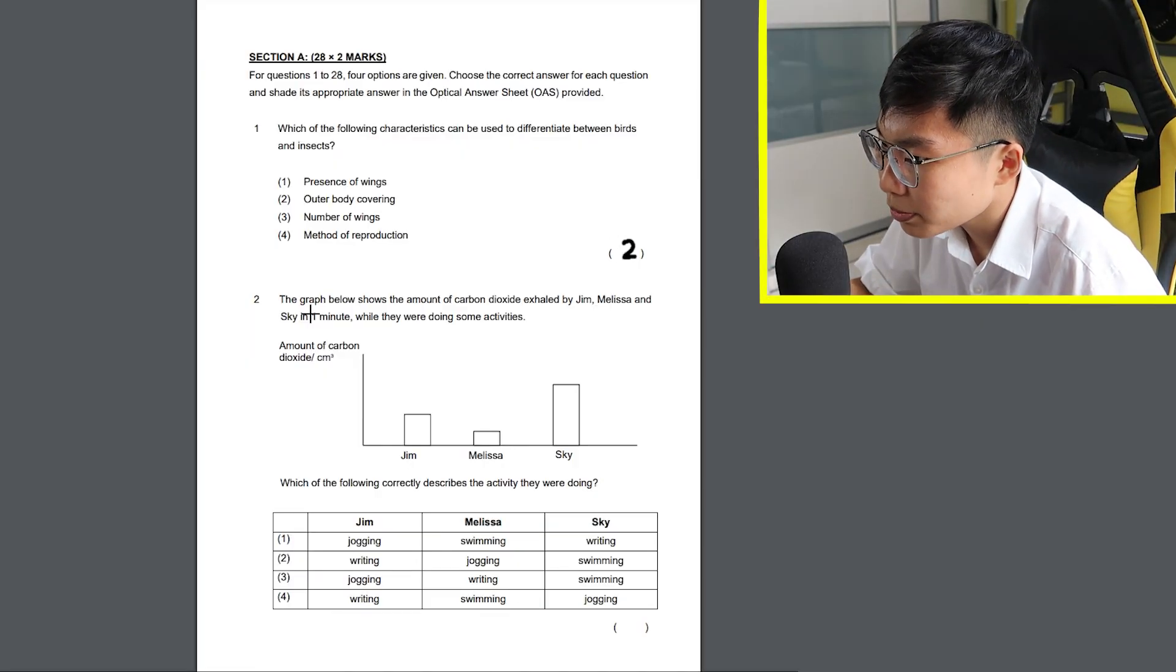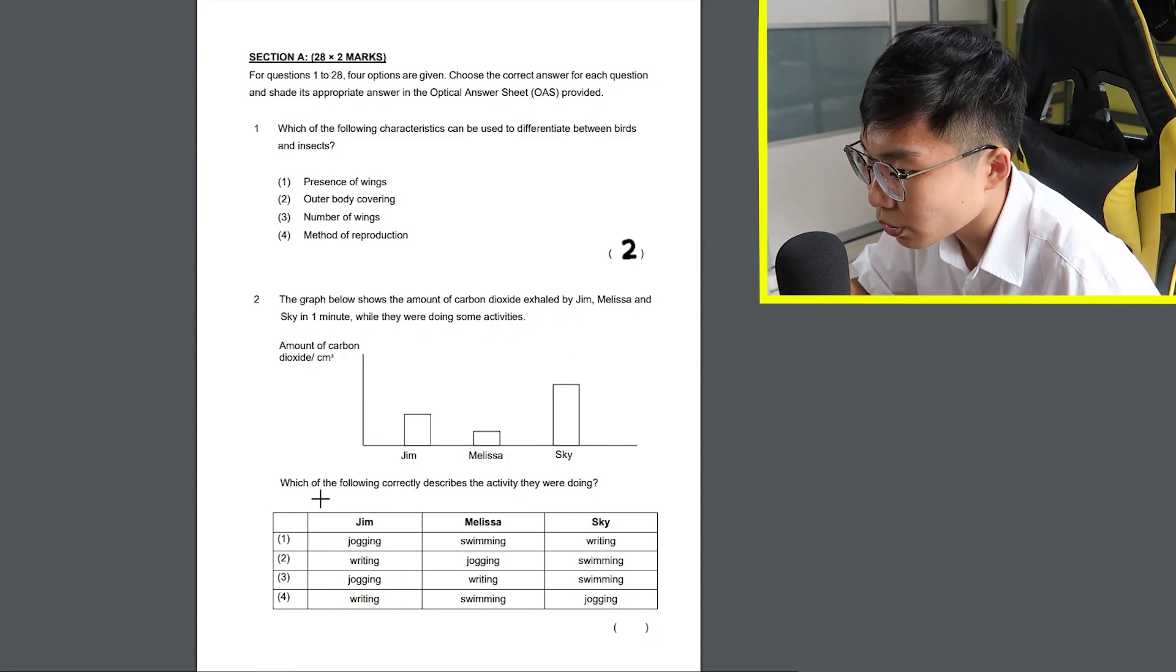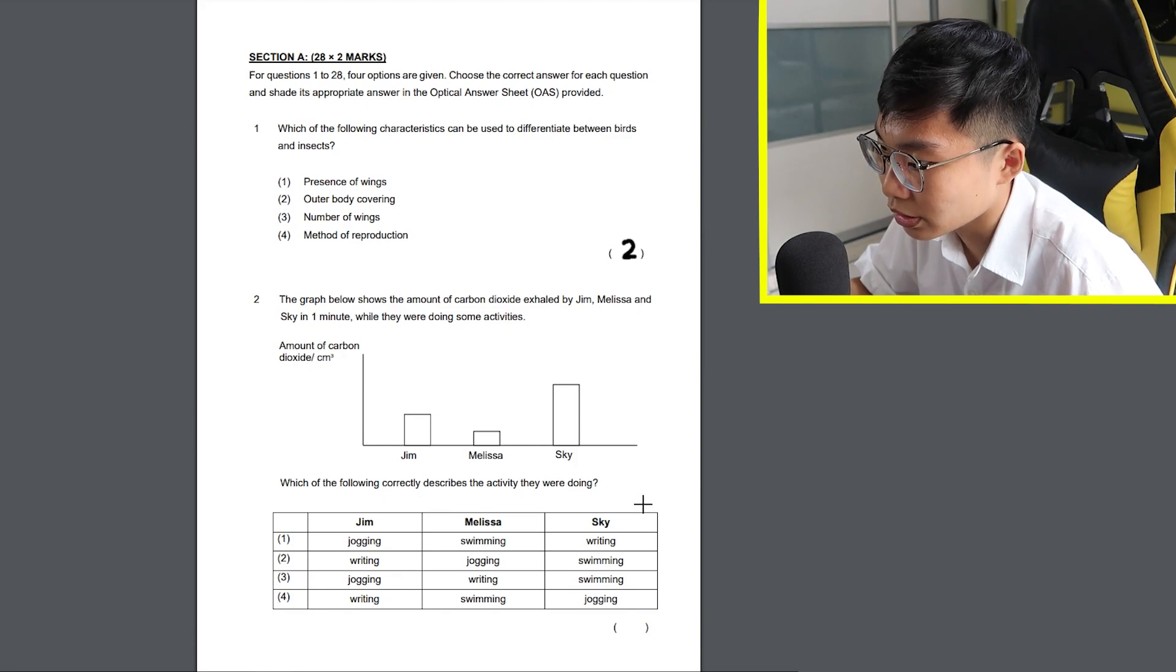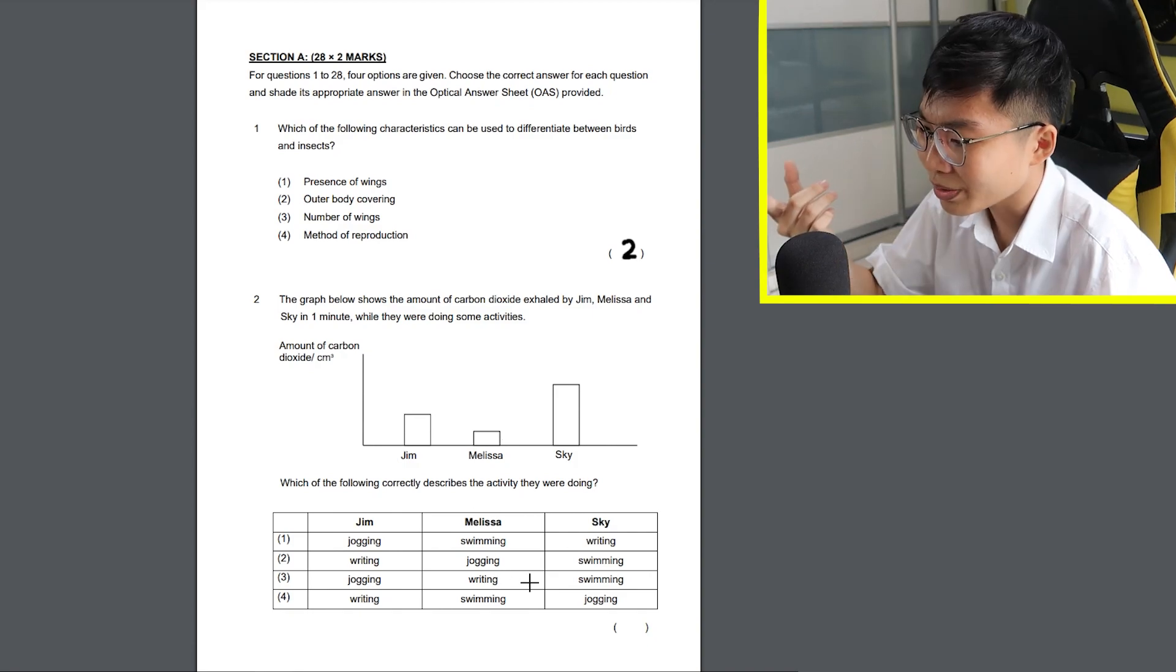Number 2 is... The graph below shows the amount of carbon dioxide exhaled by GM, Malaysia and Sky in 1 minute while they were doing some activities. Which of the following correctly describes the activity they were doing? Oh okay, so this is just common sense. So the least amount will be writing and... Wait, both jogging and swimming is exercising. Aren't they about the same? I mean, it's number 3, but I actually thought you'll need to breathe more while jogging than swimming. But okay.